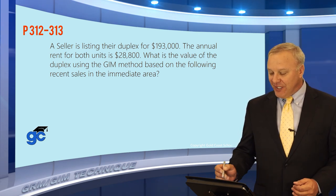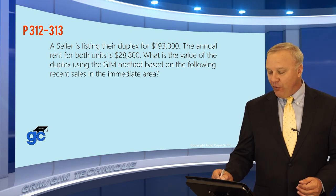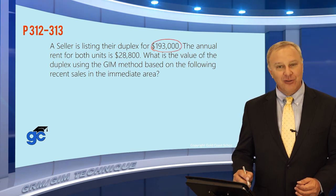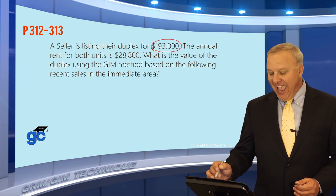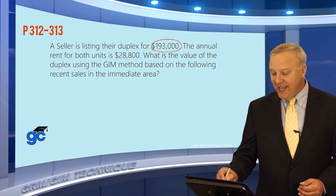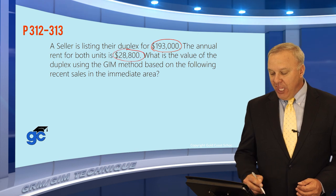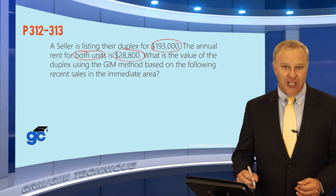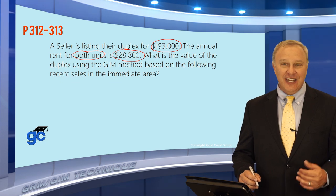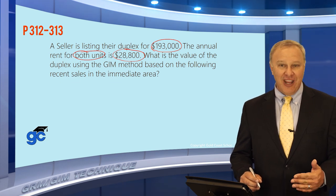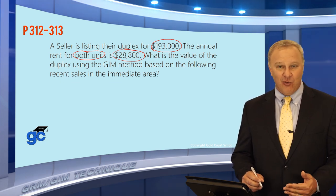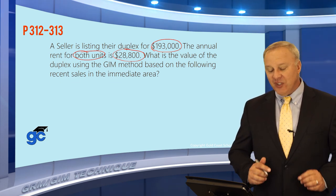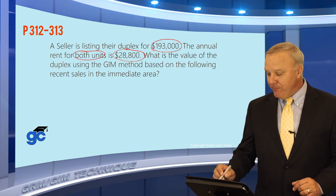A seller is listing their duplex for $193,000. The annual rent for both units is $28,800. Be very careful to see whether it says 'for both units' or 'each unit' — if it said each unit, you would have to double it. Here it says both units, so we'll leave it the same.